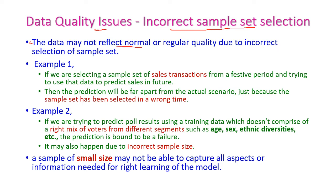The data may not reflect normal or regular quality due to incorrect selection of the sample set. For example, let us take the sales transaction example. The sample may be taken during a festival period. During festival period, sales will always be very high. If we take a sample in this period, during the normal time the sales will not be very high. This is called a sample selected during a non-representative time.